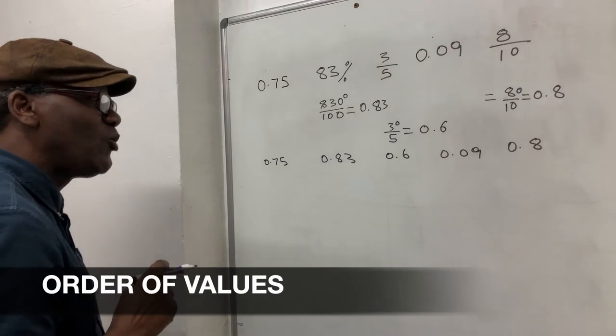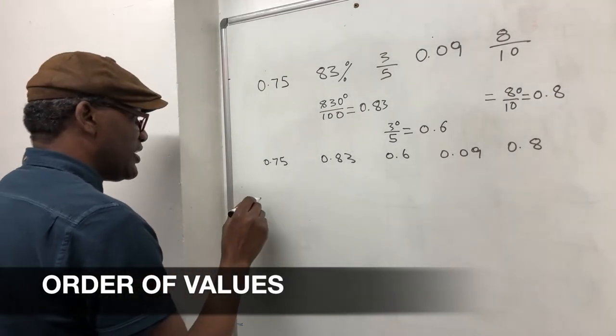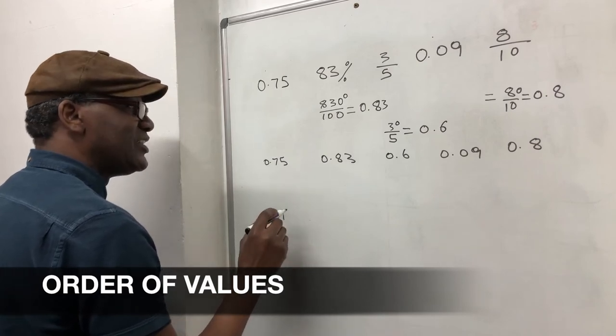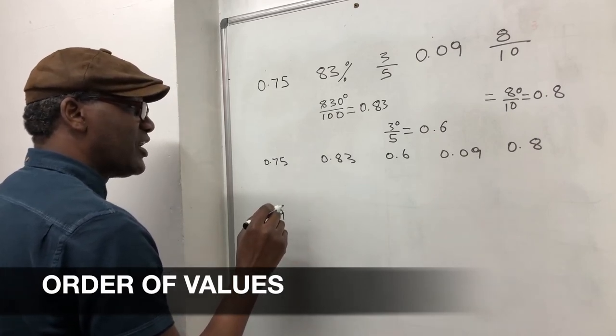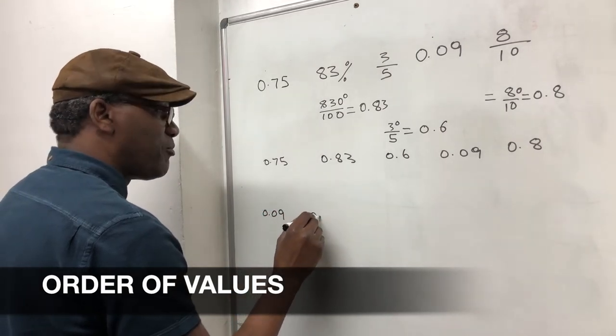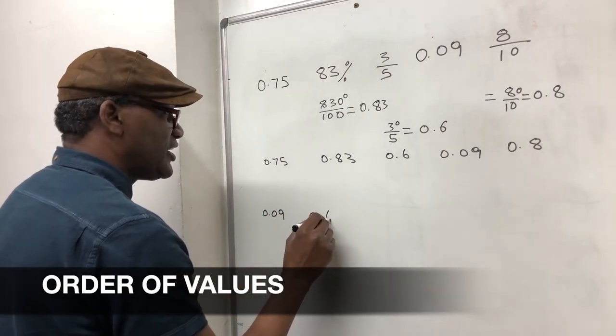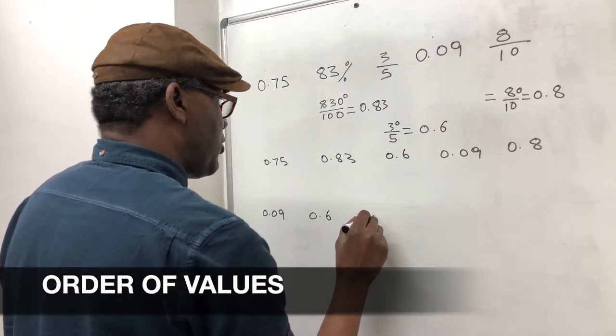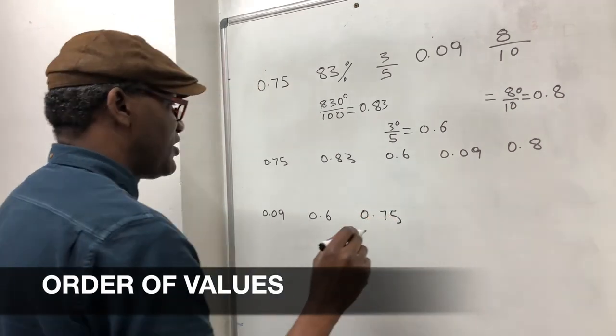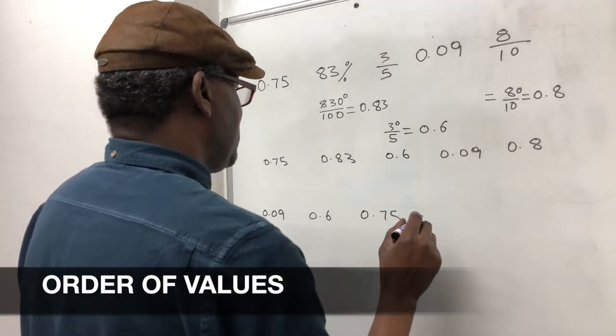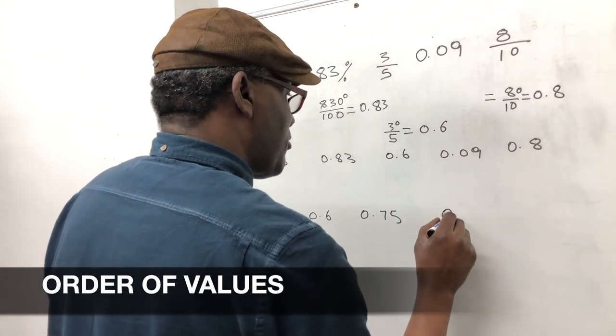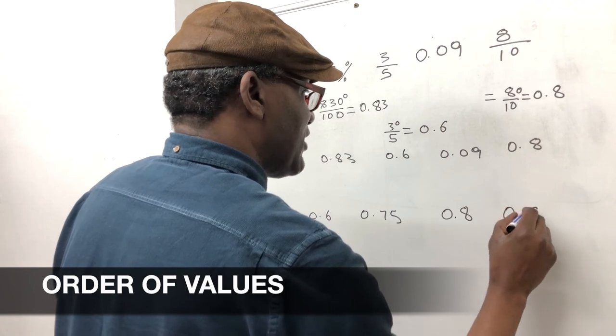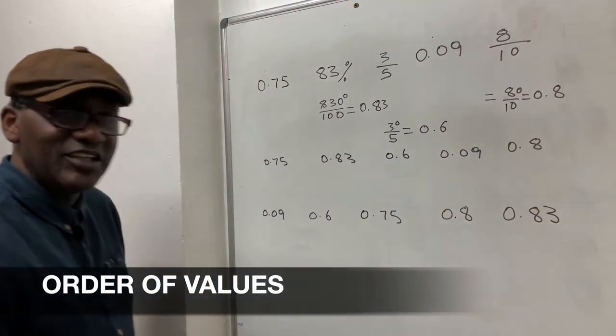So starting with the smallest would be 0.09, then 0.6, and 0.75. Then you would have 0.8, and then you would have 0.83. Thank you.